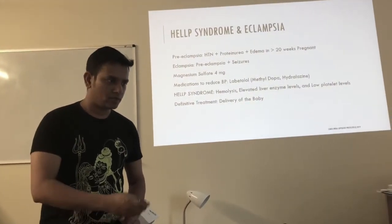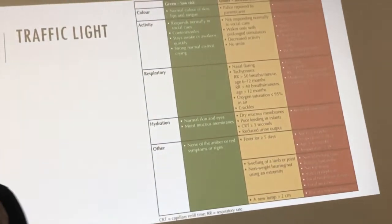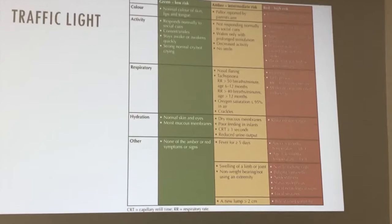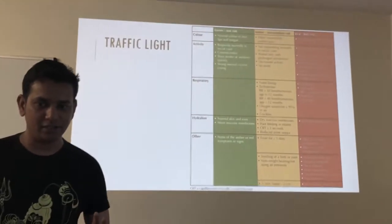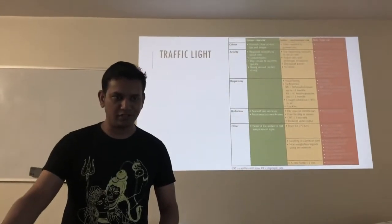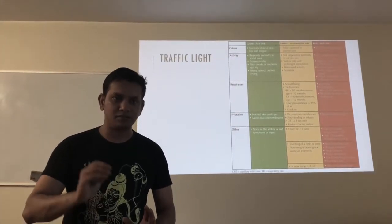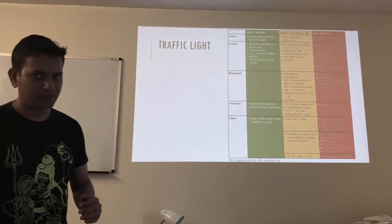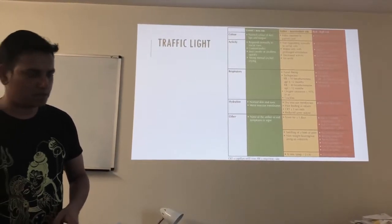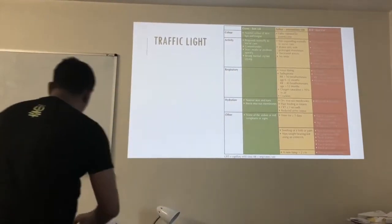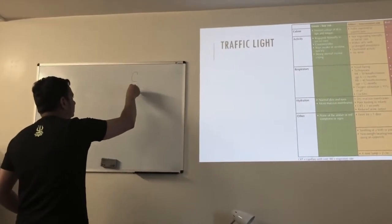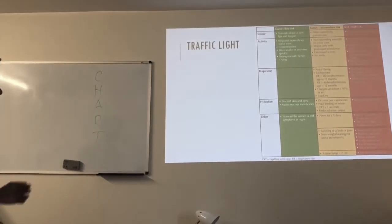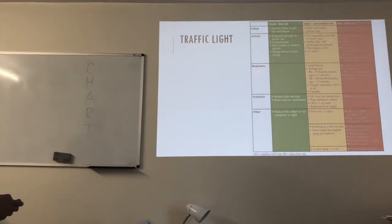The traffic light system has green, amber, and red categories. Green goes home; amber stays in hospital or goes home if parental support is adequate and they live close by; red gets admitted. To memorize the categories, use the mnemonic CHART: Color, Hydration, Activity, Respiratory, Temperature.